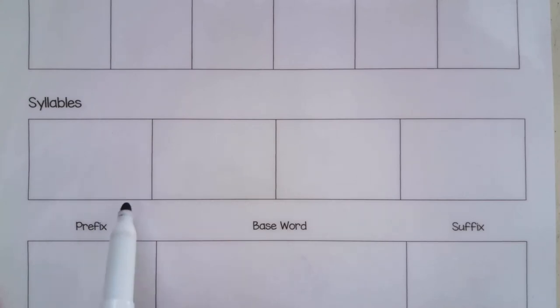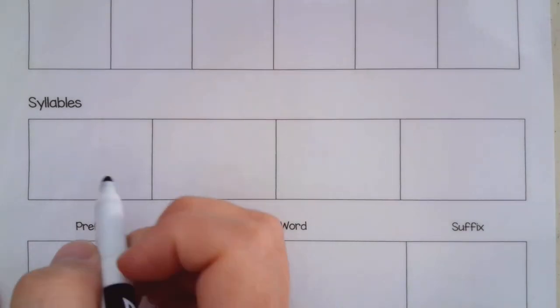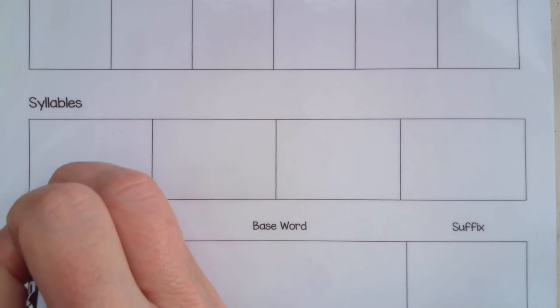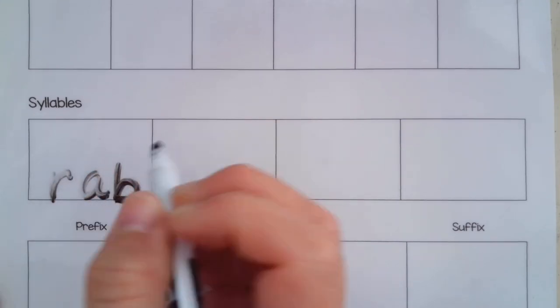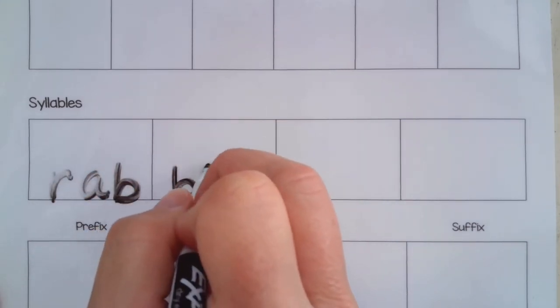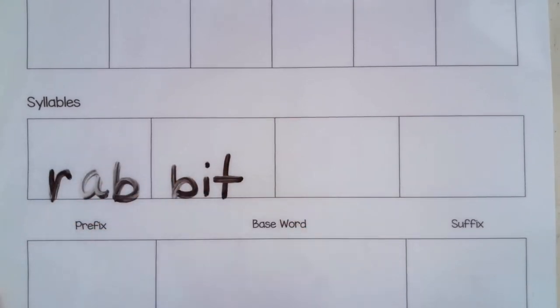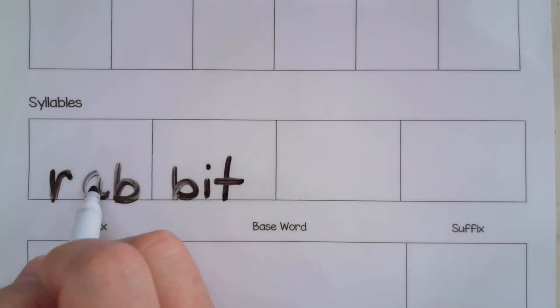Another one - rabbit. Now this is good when we're teaching students the rabbit rule. We think of that short sound. What are we hearing? We're hearing an ah in rabbit so we know it needs to be closed in. Rabbit. Rabbit. That's usually how I have students syllabicate these.